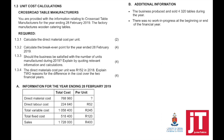Question 1.3 is unit cost calculations — this is a separate question from 1.2, so use the correct information. Crossroad Table Manufacturers: you are provided with information for the year ended 28 February 2019. The factory manufactures wooden catering tables. Required: calculate the direct material cost per unit, calculate the break-even point, assess whether the business should be satisfied with units manufactured, and the direct material cost per unit was 152 in 2018 — explain two reasons for the difference.